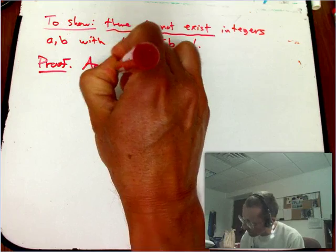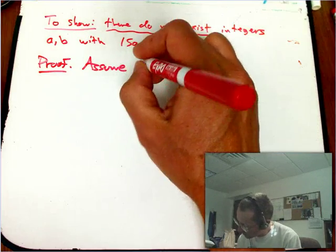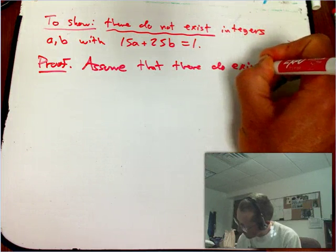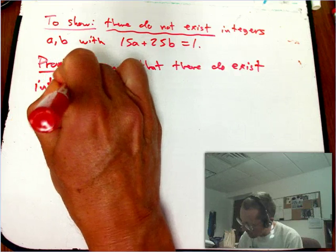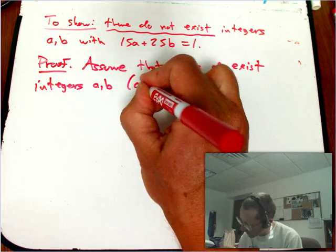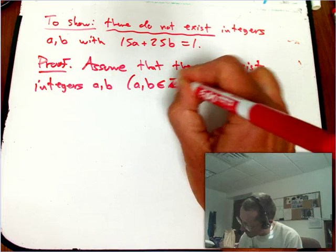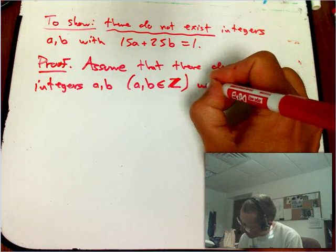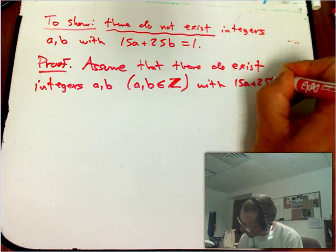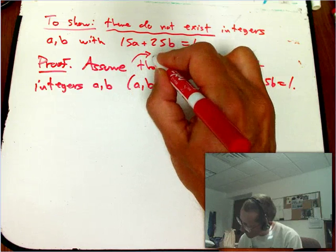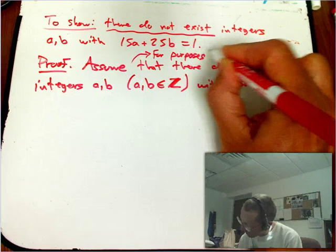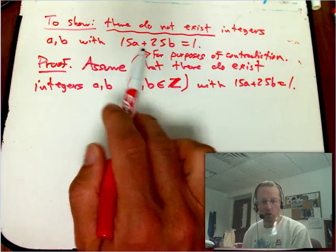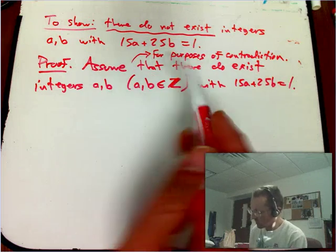So we're going to start out by assuming the negation of the conclusion. Assume that there do exist integers a and b — symbolically, a and b are elements of the set of integers, denoted by Z with the two crossbars — with 15a plus 25b equals 1. We could add 'assume for purposes of contradiction' to make it even clearer, but that's optional. Because if you start any proof by assuming the negation of the conclusion, it should be clear that's why you're doing this.